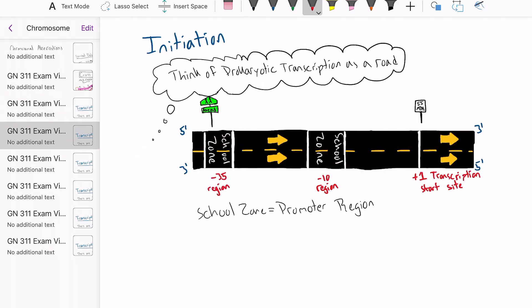In order to illustrate the process of transcription, I will use a road with a school zone. For this illustrative analogy, the road represents a DNA sequence.